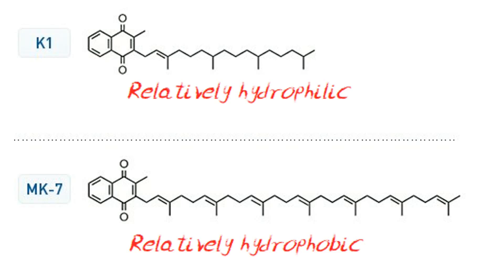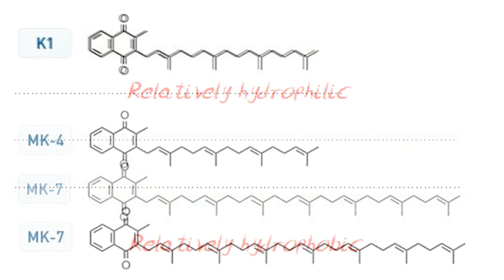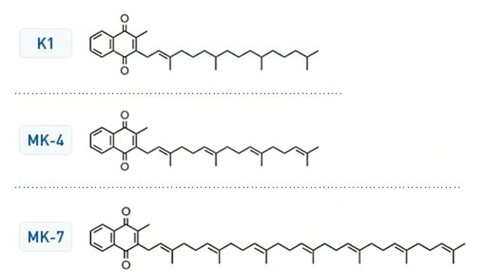To complicate matters further, Vitamin K2 is subdivided according to the length of this tail, which further impacts its ability to circulate around the body. The chain length is designated by the number following MK in Vitamin K nomenclature. For example, MK4 is short, making it relatively more hydrophilic like phyloquinone, whilst MK7 is longer, making it more hydrophobic.